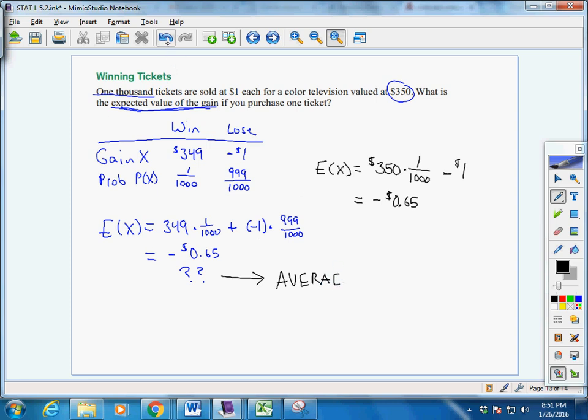So this is our average loss per ticket. And by average losses, we mean basically for each of the 1,000 tickets sold, there's a loss of 65 cents per ticket.